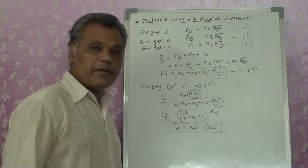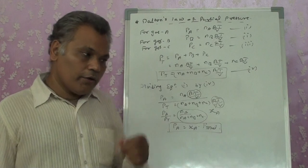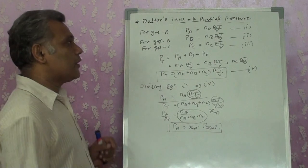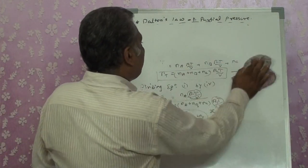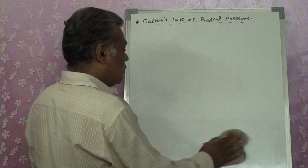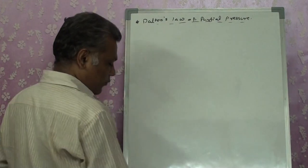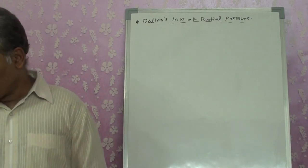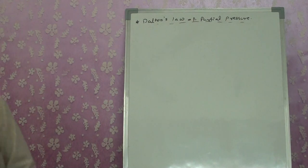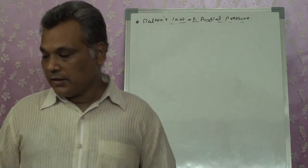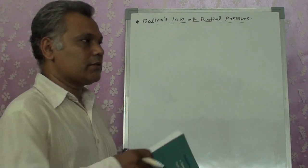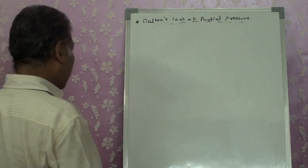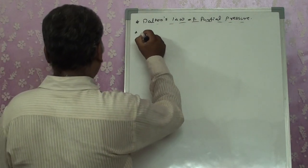Now we will do certain numericals based on these formulas so you can understand the actual conditions and what type of numericals can be asked. You are doing numericals from your textbook — solved, unsolved, and exercises. I am going to give you some additional numericals for practice. You can note down the data in your classwork.